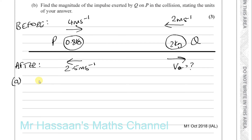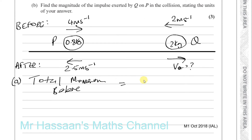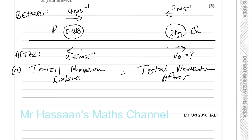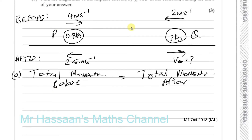What we're going to use is the principle of conservation of momentum. In momentum questions, that's always going to be part of the question. We've got to find the speed of Q immediately after the collision. The total momentum before the collision is equal to the total momentum after. Now you've got to be really careful about direction — you have to decide which side is positive and stick with that. I'm going to take right as positive.